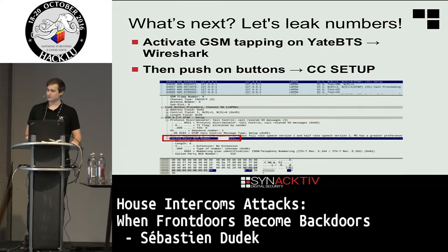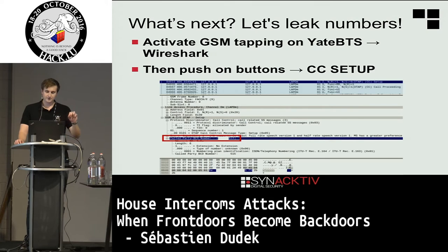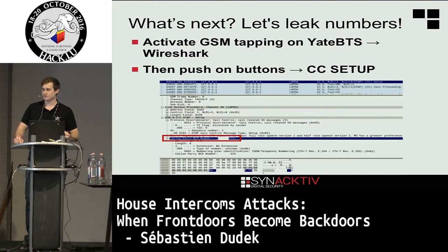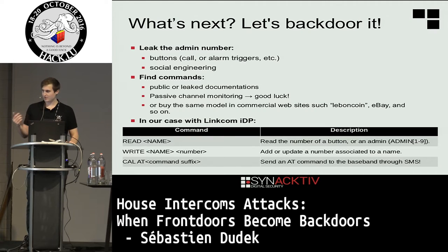When intercepting calls, I used Wireshark after enabling the GSM Tap feature in YetBTS. In the call setup frame, there is a field called "called party BCD number" which is the resident number being called when the button is pushed. With that, I've leaked one number. I then replace the resident's number and associate it with my IMSI — my SIM card — and after that I'm able to open the door.